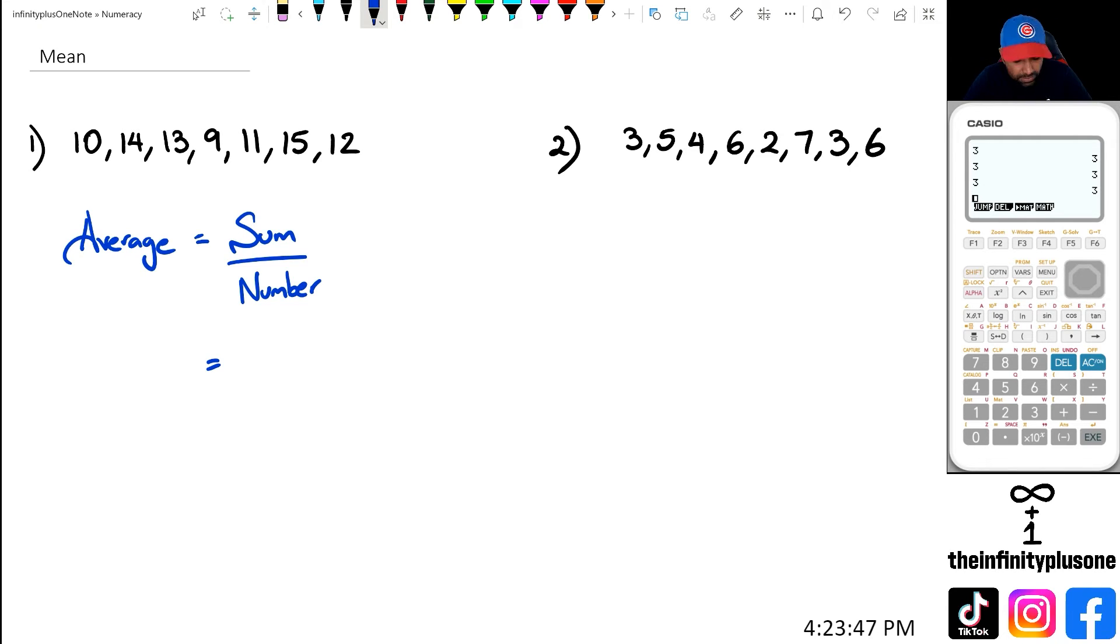So if you look at the sum of these numbers, I'm going to go 10 plus 14 plus 13 plus 9 plus 11 plus 15 plus 12. And that's going to give me 84.